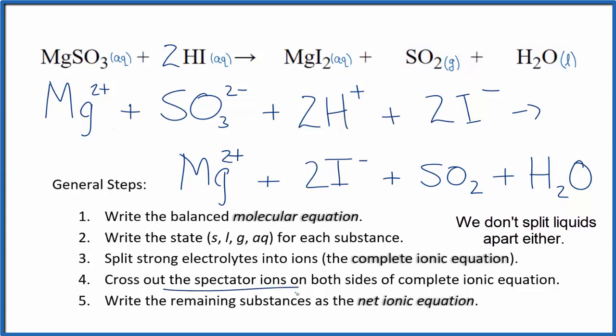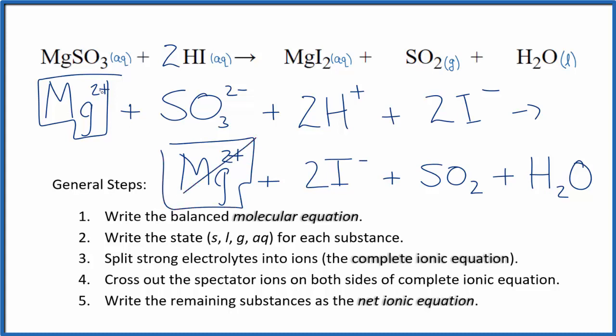Now we can cross out the spectator ions. They're on both sides. I see a magnesium ion, Mg2+, in the reactants and again in the products. Let's get rid of that. That's a spectator ion.